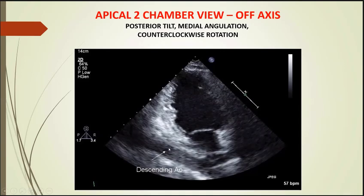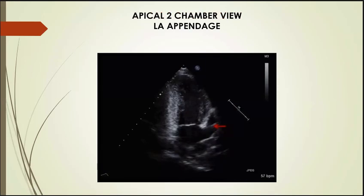In the apical two-chamber view, we also get to see the left atrial appendage — this projected part off the left atrium. This is useful whenever there are clots in the left atrial appendage, such as in cases of mitral stenosis or atrial fibrillation. This view is important to determine whether to start anticoagulation for the patient.